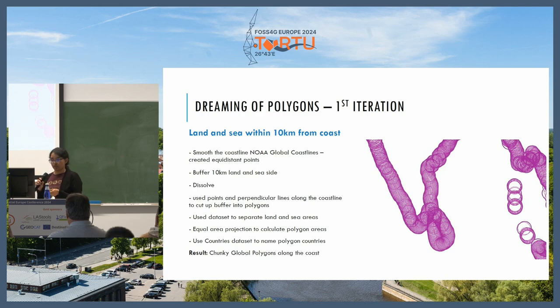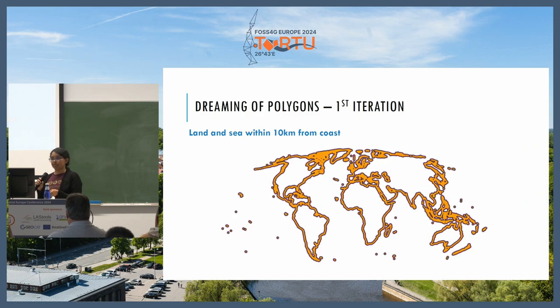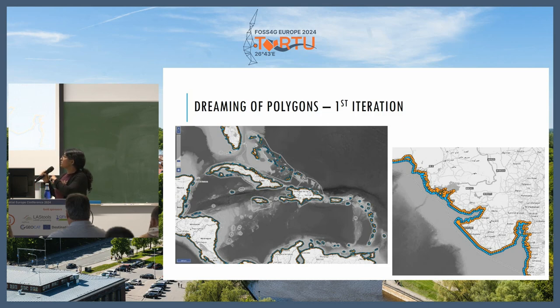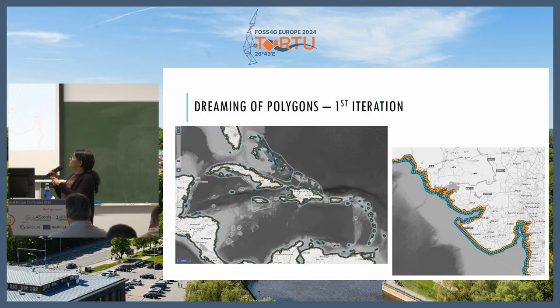A snapshot of the result looks like this in some areas — this is a zoomed-in view of the whole global coastline dataset result.